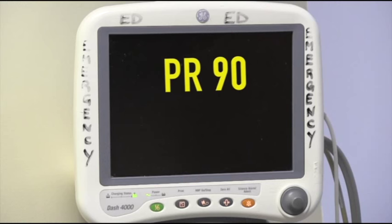His vital signs are pulse 90, blood pressure 160 over 80. You suspect he is having an MI, so you obtain an EKG.